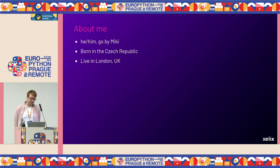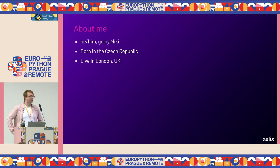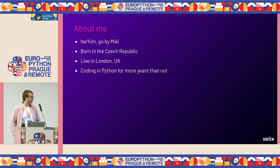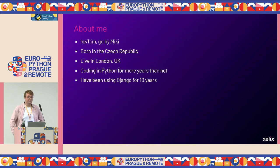A bit about me: my pronouns are he/him. I go by Mickey if you struggle to pronounce my name. I was born not far from here, but I currently live in London. I've been coding in Python for more years than not, and for ten years I've been using Django. I particularly care about Django's interactions with the database.